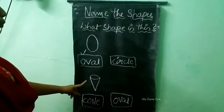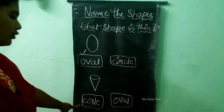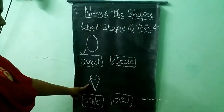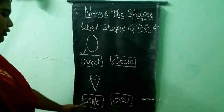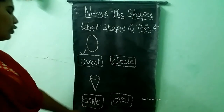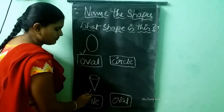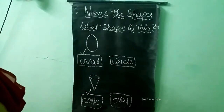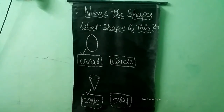And next. What shape is this, children? Is it cone or oval? Tell me. This is a cone shape. So we need to tick cone here. This is how we need to name the shapes. Thank you for watching this video.